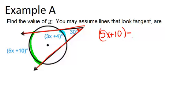minus the smaller arc, 3x plus 4, divided by 2 equals the angle, which is 30 degrees. So we set up this equation given this relationship: big arc minus little arc divided by 2 equals the angle.